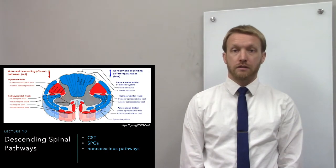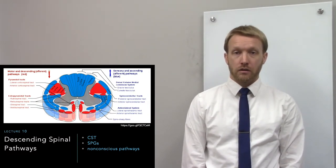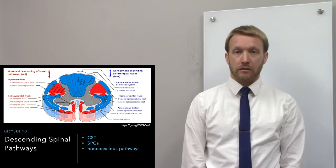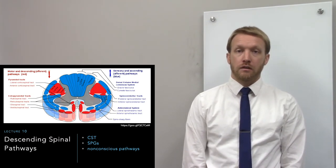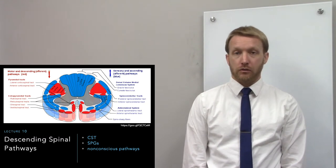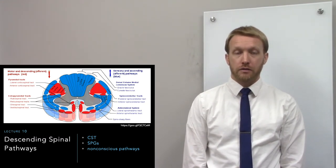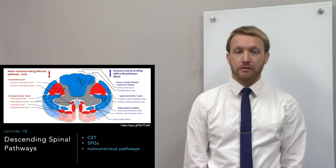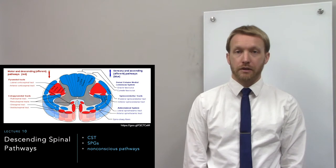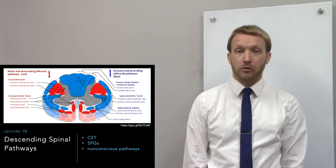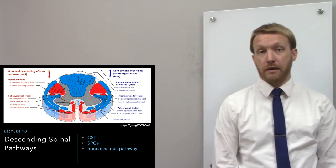In this lecture, we'll cover the descending motor pathways in the spinal cord. First, we'll go through the corticospinal tract, which connects upper motor neurons with lower motor neurons. Then we'll go through the local circuitry of the spinal cord that helps regulate motor output — those will be our spinal pattern generators. Finally, we'll touch on non-conscious descending pathways that help influence motor output without us having to think about it.